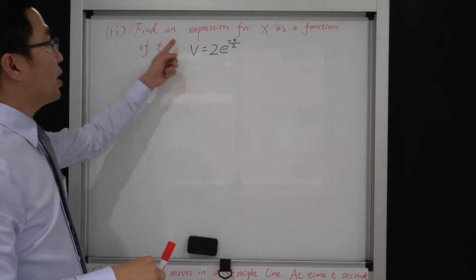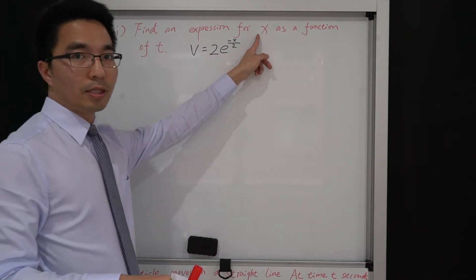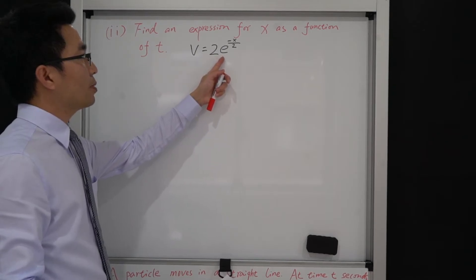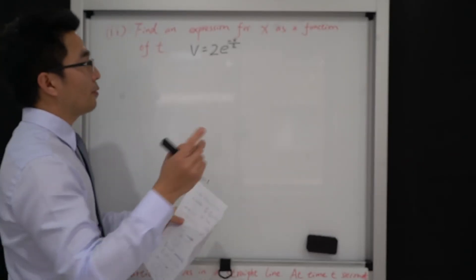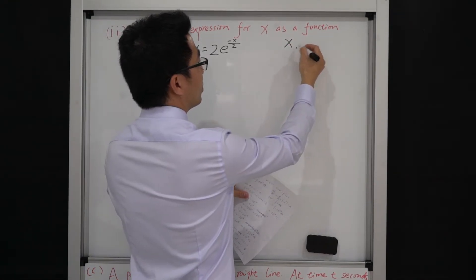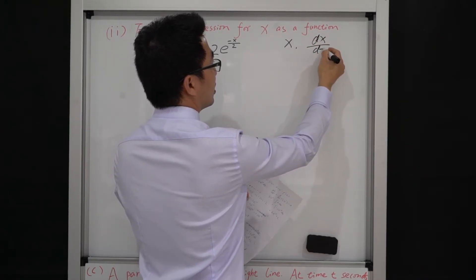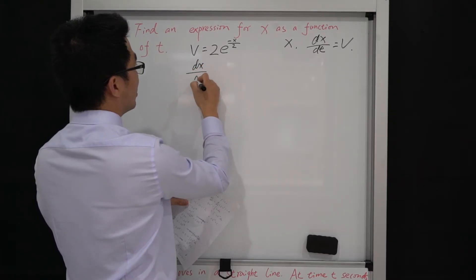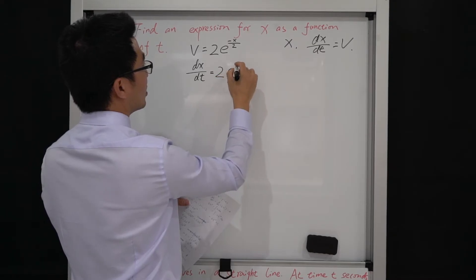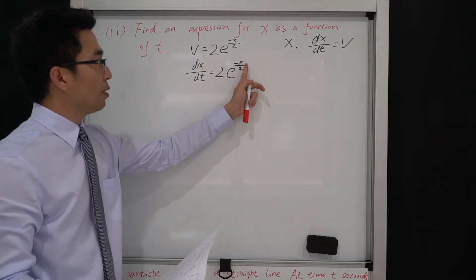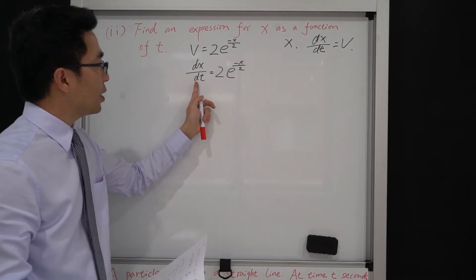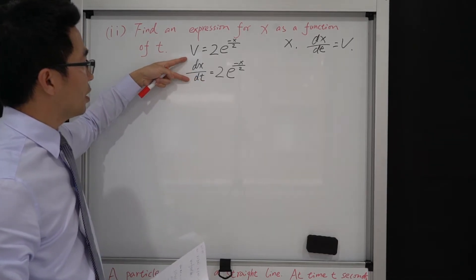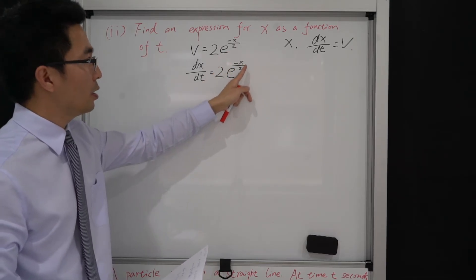The second part asks for an expression for x as a function of t. From part i, v = dx/dt = 2e^(−x/2). We can't integrate directly with respect to t because we have a function of x. Instead, we flip: dt/dx = ½e^(x/2). We bring dx to the right-hand side so we can integrate with respect to x.